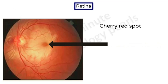Cherry red spot at the macula is one of the important features of Berlin's edema. Details of why you get it and what the other causes of cherry red spot are will be covered in the subsequent video. Other effects of contrecoup injuries may be concurrently present, such as choroidal ruptures, retinal hemorrhages, macular edema, macular holes, retinal tears, vitreous hemorrhage, and orbital fractures.